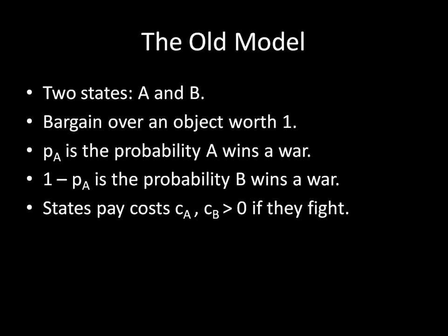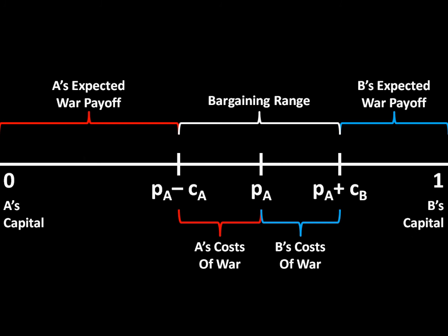This is sufficient to draw the geometric diagram of the bargaining model of war. A expects to receive P-A but has to pay a cost to fight, which is minus C-A, so A's expected war payoff is that amount. Likewise, B's expected war payoff is 1-P-A minus C-B. Any negotiated settlement between P-A minus C-A and P-A plus C-B is mutually preferable to war. Absent any bargaining frictions, we should expect these two states to be able to settle somewhere in that bargaining range.